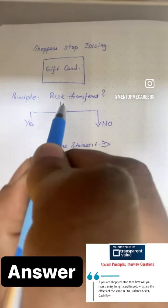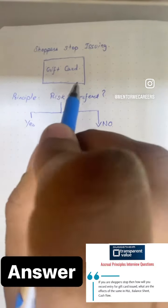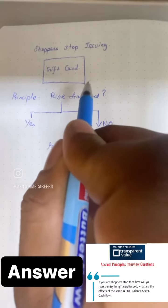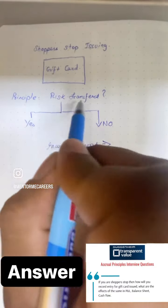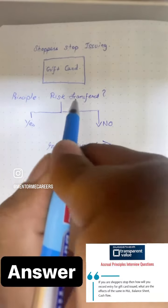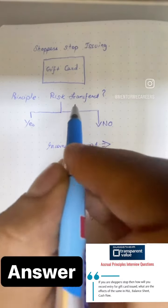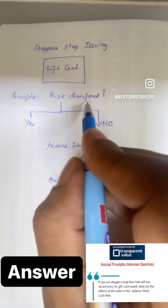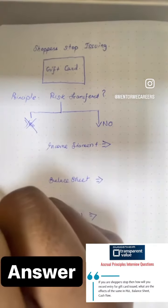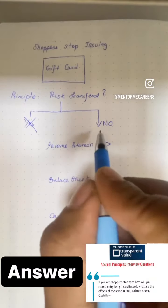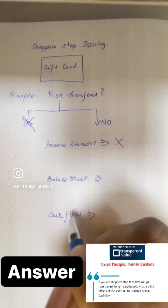The principle that we're actually talking about is risk being transferred. So when Shopper's Top or Amazon or any other such company is giving a gift card, the question to answer first is whether the risk is actually getting transferred. In this case, there is no product which is getting sold, and hence there is no question about risk actually getting transferred. So this directly leads us to the fact that it cannot be recognized in the income statement as revenue.